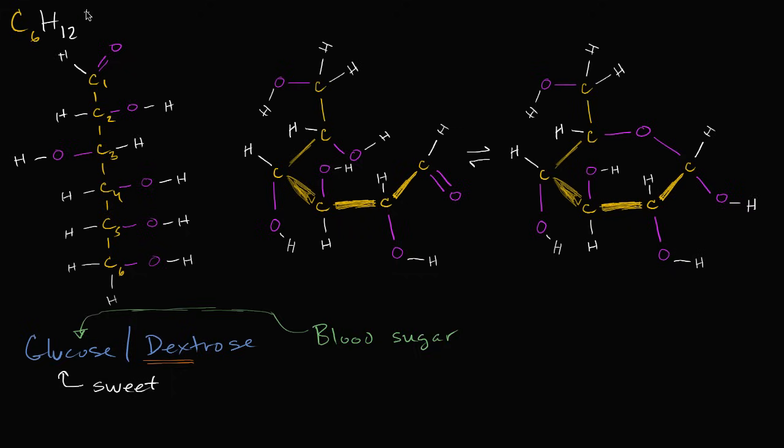And then we have, how many oxygens do we have? We have one, two, three, four, five, six oxygens. So you might notice, we have six carbons, and then the ratio for every one oxygen, we have two hydrogens, which is really the ratio of hydrogens to oxygens in water.